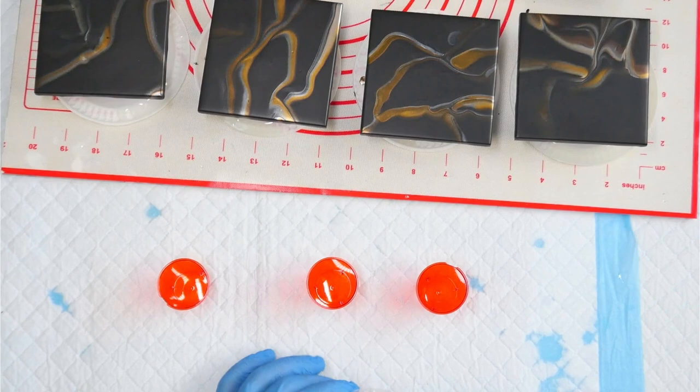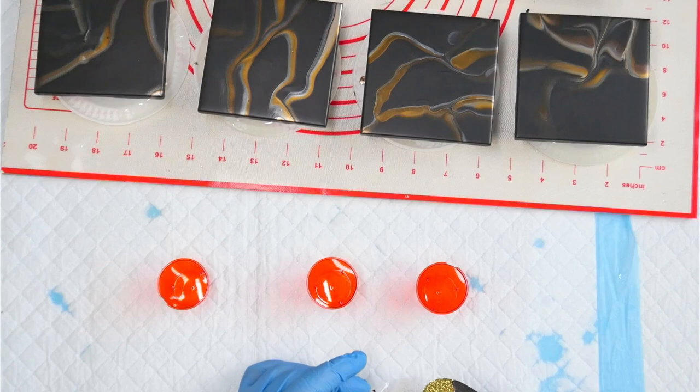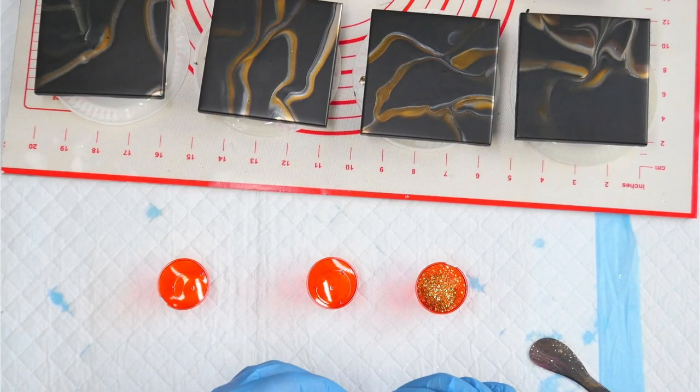So the first powder I'm going to add is 24k. And I'm going to add quite a bit because I want this to be really saturated I guess.